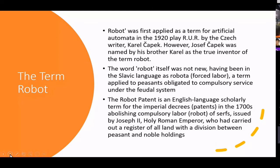The term 'robot' was not uttered until the 1920s. You can see that the term is often associated with forced labor. There's a reference to robot patents or imperial decrees also about abolishing compulsory labor. So although the term 'automata' was uttered much earlier, the term 'robot' came much later and was not initially associated with automated agents or androids — rather it was more associated with forced labor.